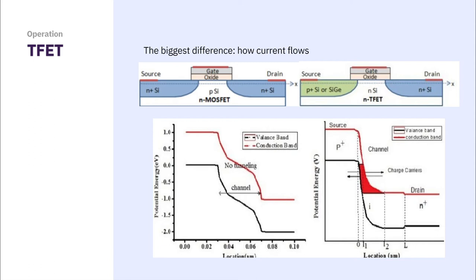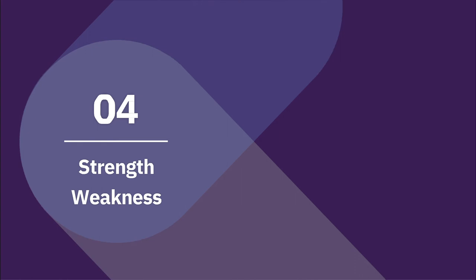To sum up, the biggest difference between MOSFET and TFET operation is channel drift or tunneling for carrier movement and different types of drain and source. So far, we investigated TFET operation lightly, then let's talk about strengths and weaknesses of TFET.